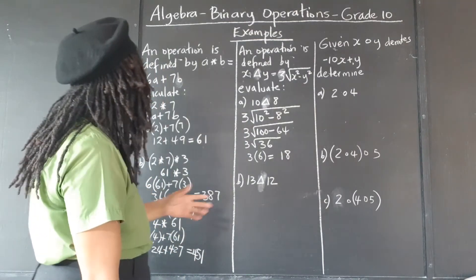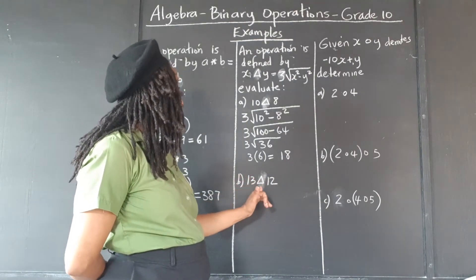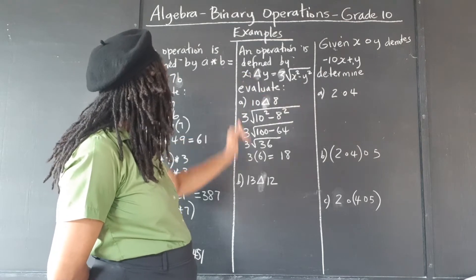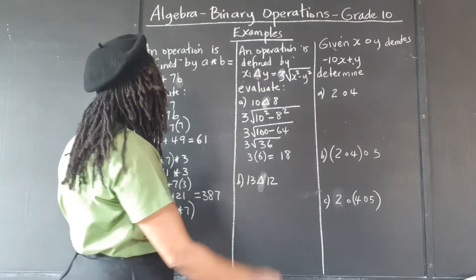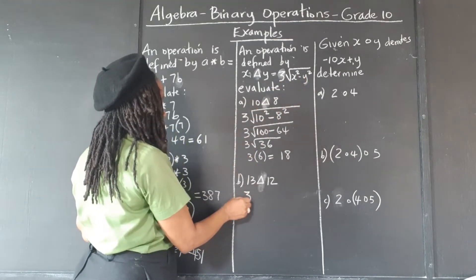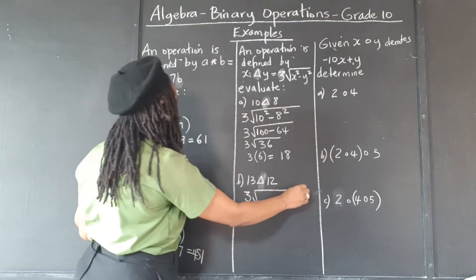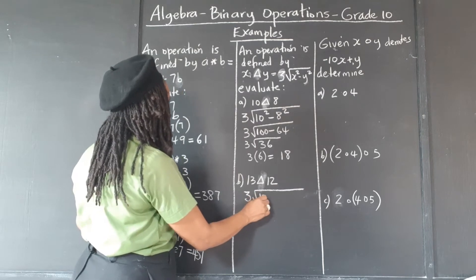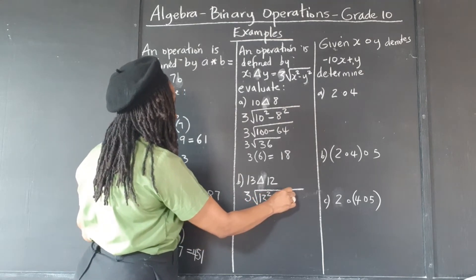Alright, again, we have 13, the same operation. So x is 13, y is 12. We're going to substitute those values into this operation here. So 3 times the square root of 13 squared minus 12 squared,